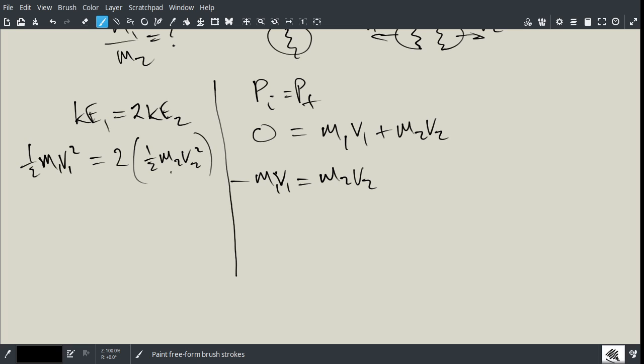Now, you can see here that these two are going to cancel each other, and so I'm going to have 1 half M1 V1 squared is equal to M2 V2 squared.